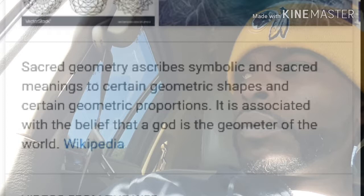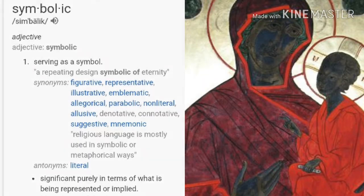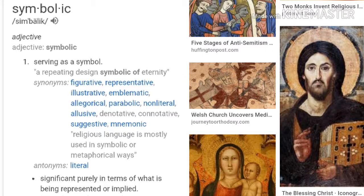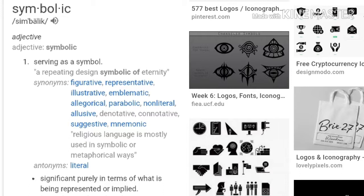That's where you get 'the architect of the world' from. 'Symbolic' means serving as a symbol, or significant purely in terms of what is being represented or implied. Some key synonyms include: figurative, representative, illustrative, emblematic, allegorical, parabolic, and non-literal. The key ones that caught my attention were allegorical, emblematic, figurative, and non-literal — and we have to be aware of these things.